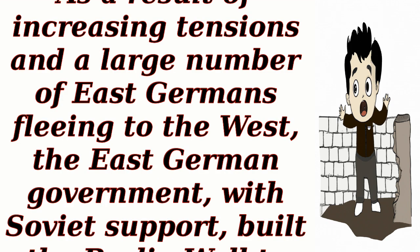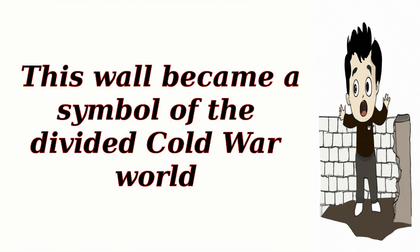Construction of the Berlin Wall, 1961: As a result of increasing tensions and a large number of East Germans fleeing to the West, the East German government, with Soviet support, built the Berlin Wall to physically divide East and West Berlin. This wall became a symbol of the divided Cold War world.